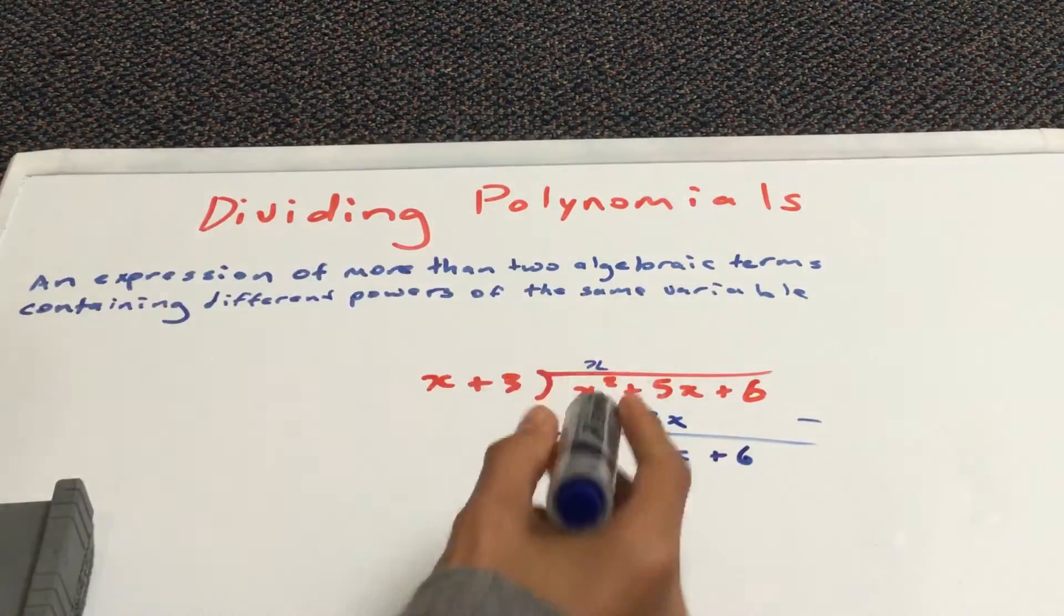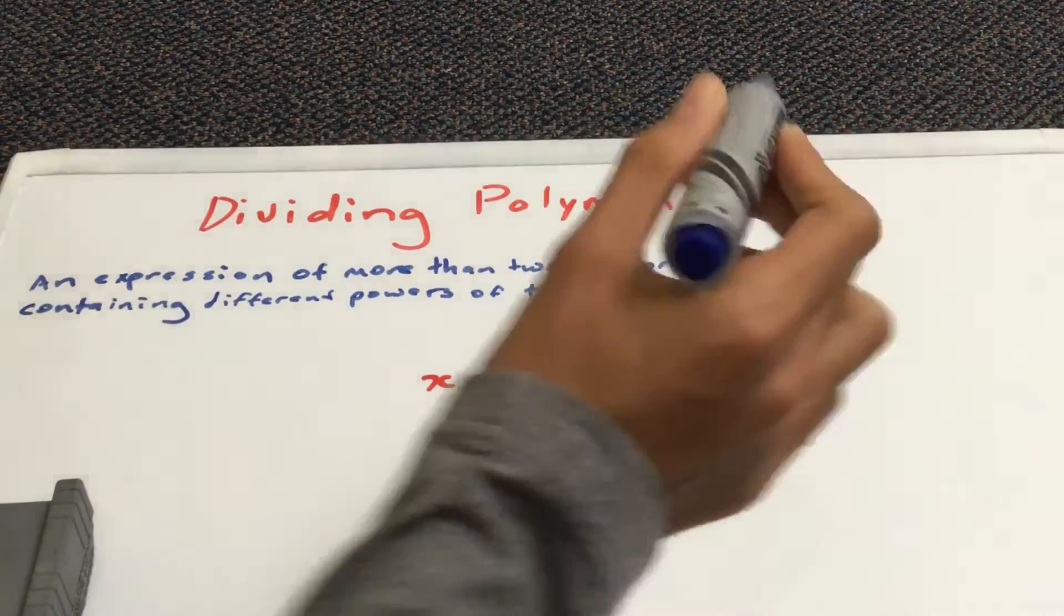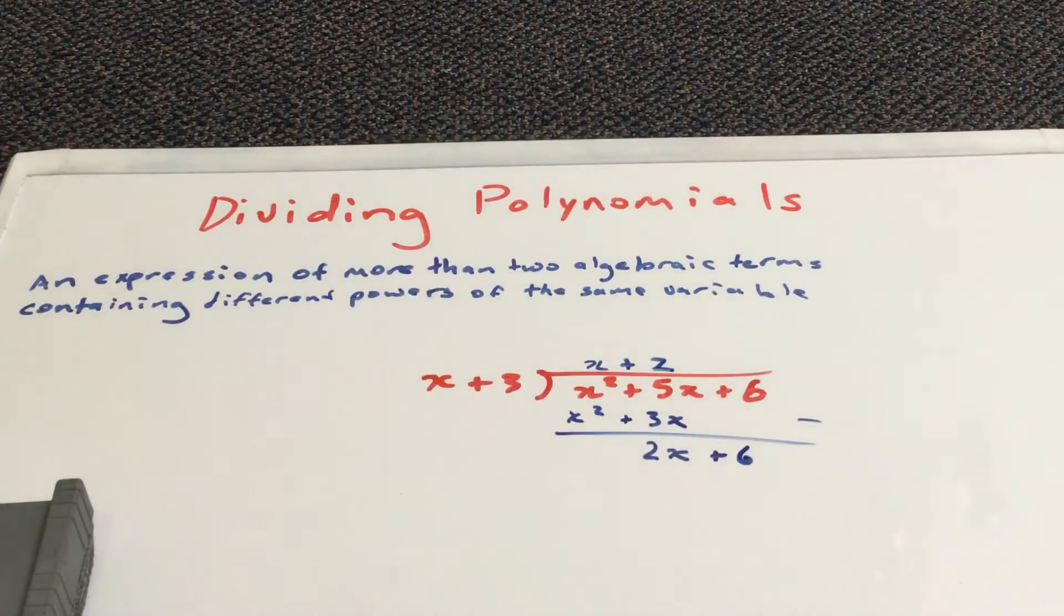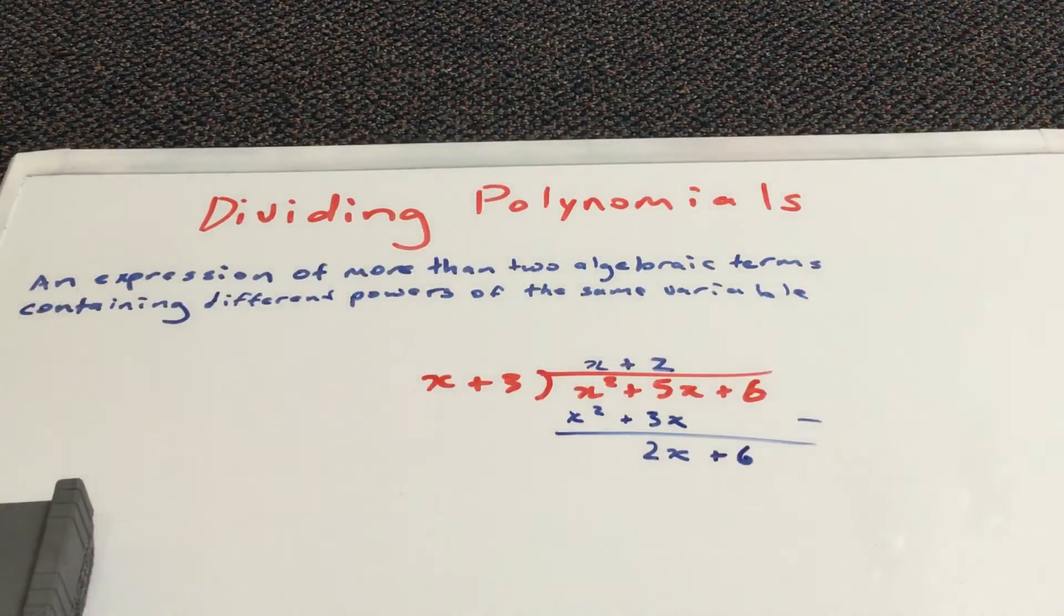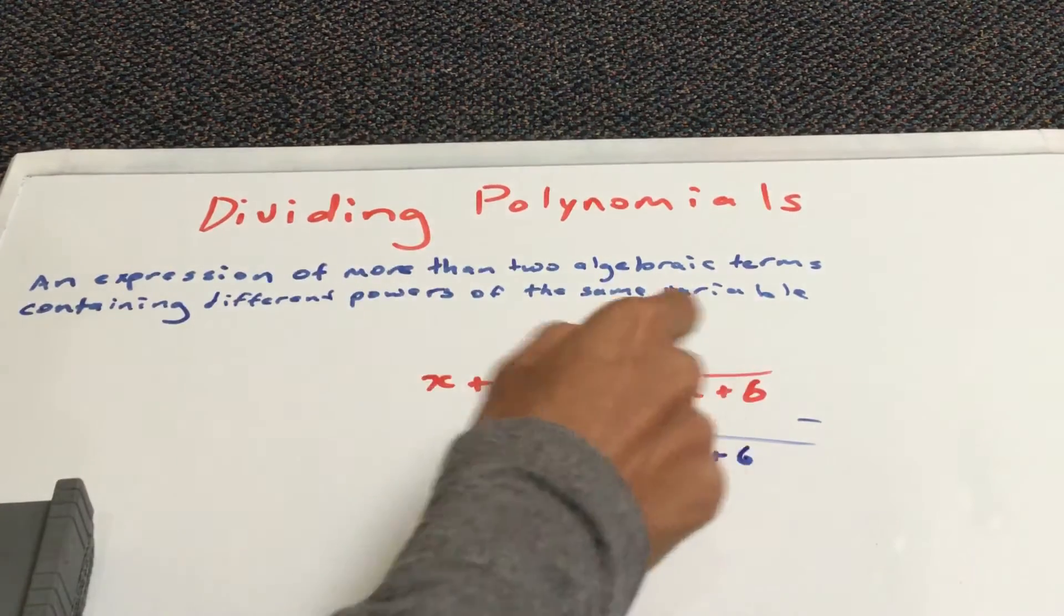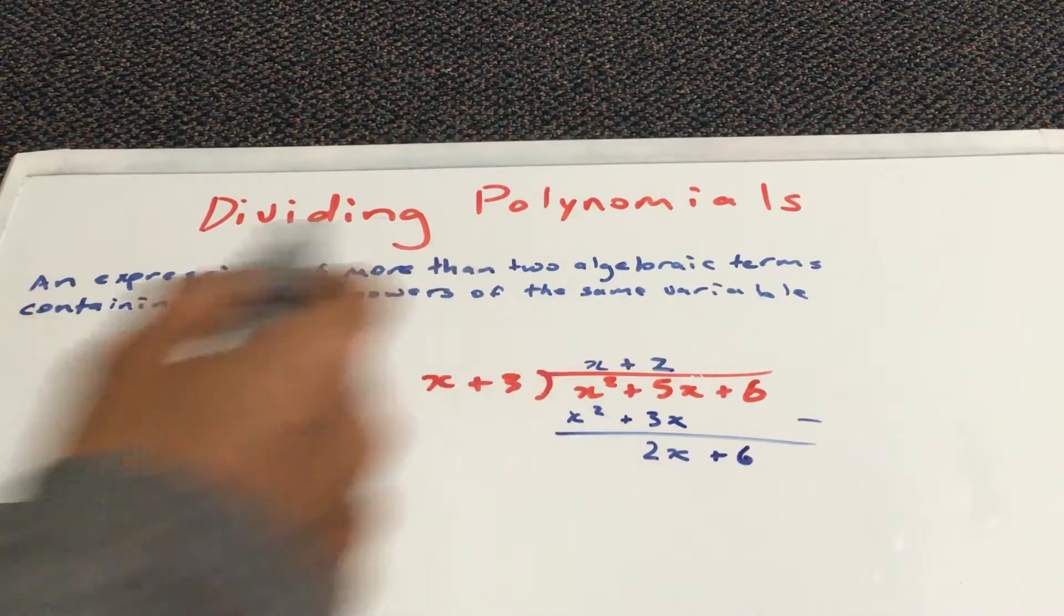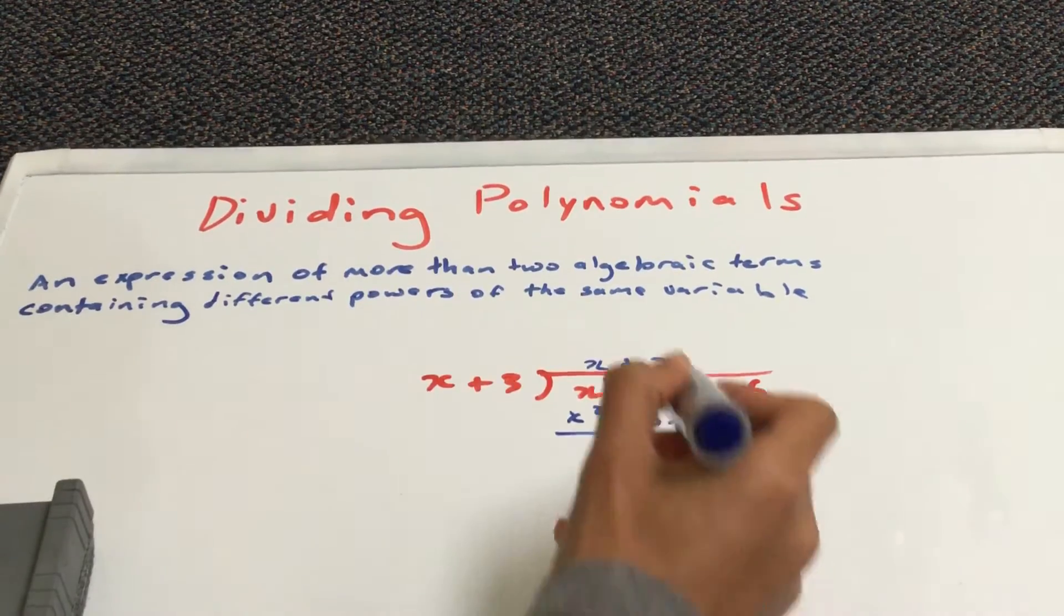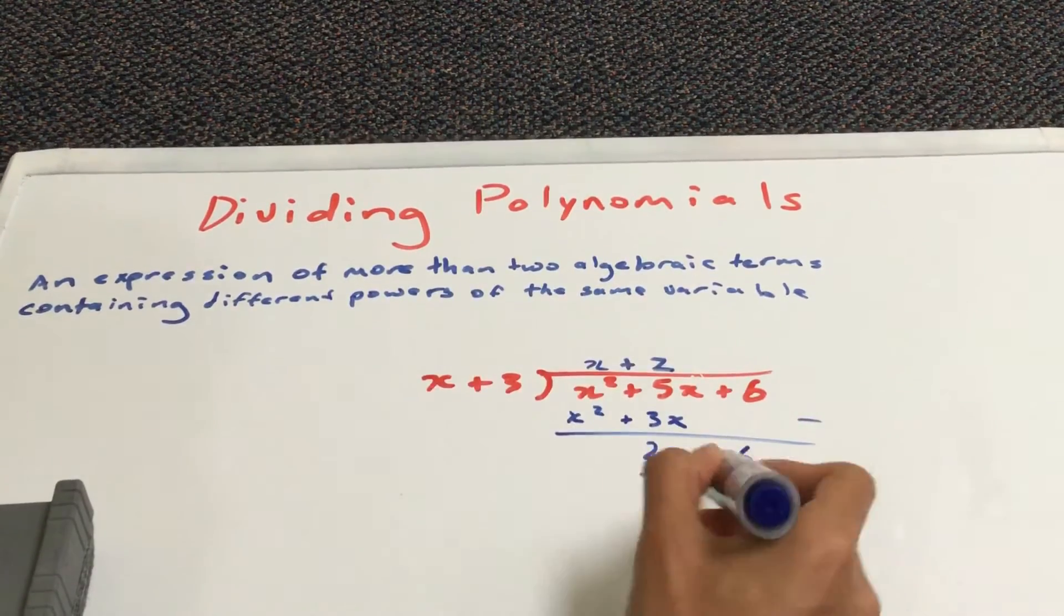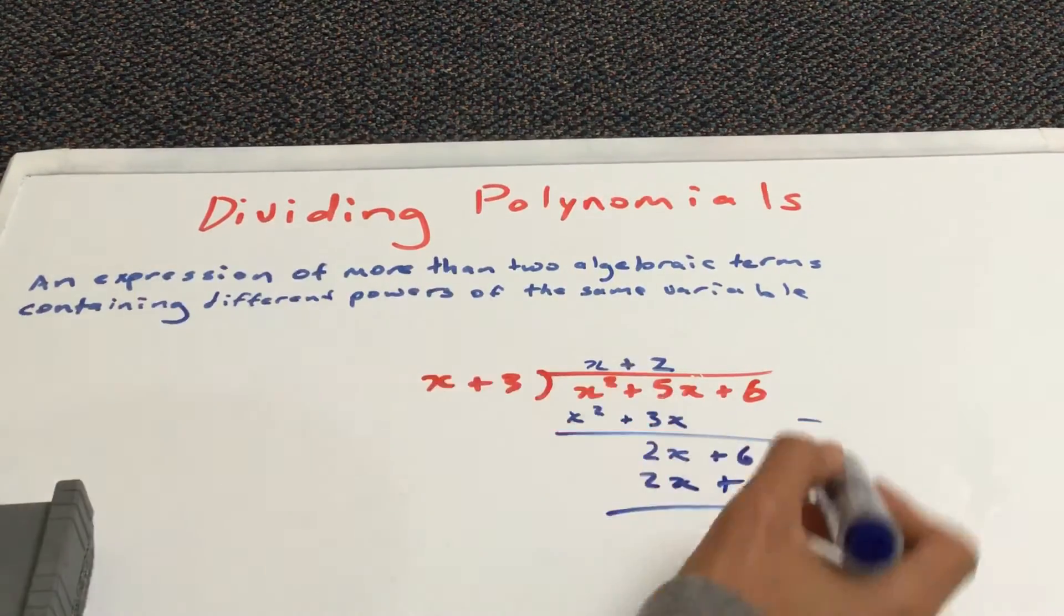Okay. So, it should be plus 2. Because 6 divided by 3 gives you 2. That's how I got 2 times x is 2x. 2 times 3 is 6. And now, you have to subtract again.